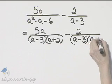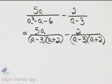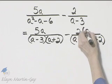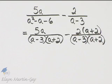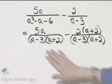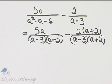If I multiply the denominator by A plus two, I must multiply the numerator by A plus two. Now look what I've accomplished. The denominators are now the same.